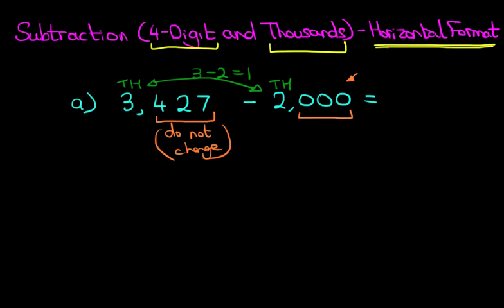3427 minus 2000 is 1427. When subtracting thousands from a four-digit number, only the thousands will change.